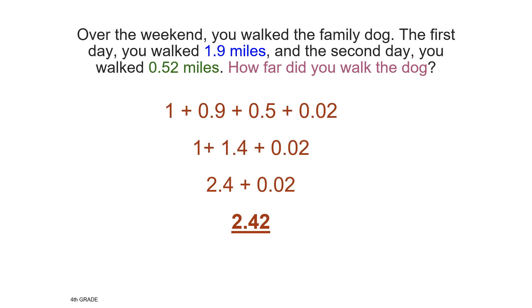Here is an example of the way one student used the decomposing strategy. How did this student decompose the numbers? They pulled each addend apart into ones, tenths, and hundredths. What did the student do next? This student added the tenths together to get a total of 1 and 4 tenths. Then, the student was able to add all the parts back together to get an answer of 2 and 42 hundredths miles.